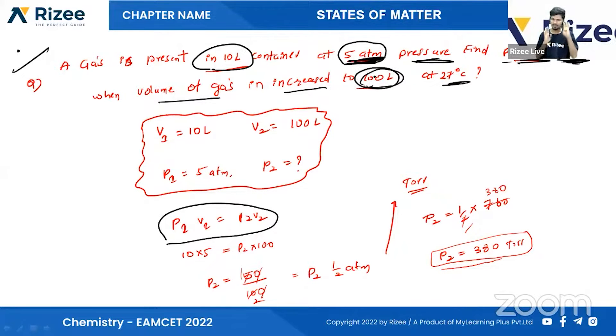We have 4 values. According to our formula, P1V1 is equal to P2V2. Pressure 1 and volume 1 is equal to pressure 2 and volume 2.